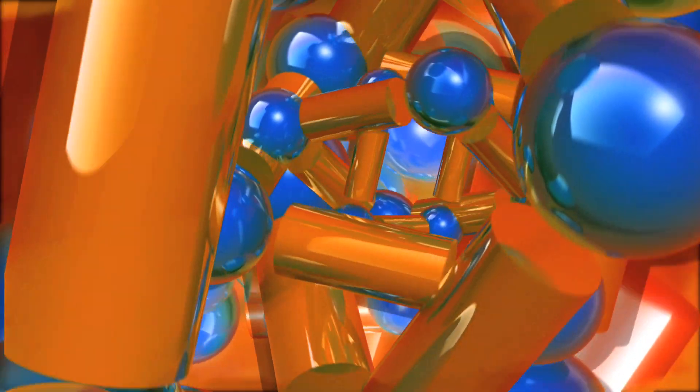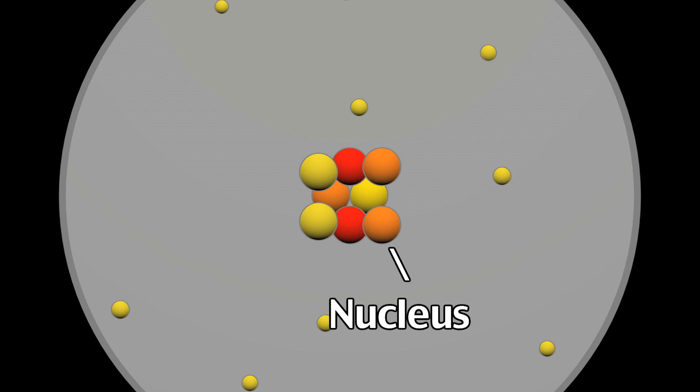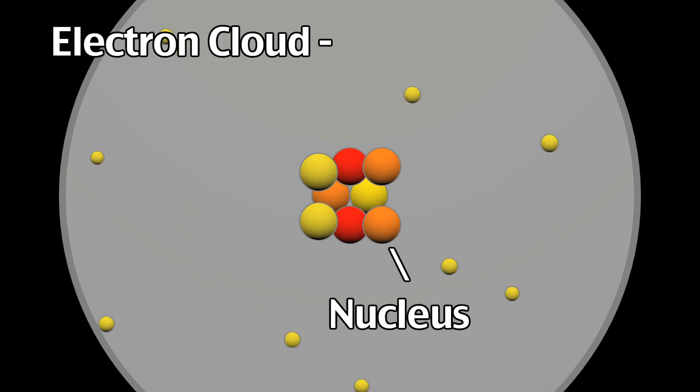If we look at some of the tiniest particles in existence, atoms, we can see electromagnetism at its finest. Atoms consist of a nucleus surrounded by a cloud of electrons which are bound to the atom by electromagnetic waves.